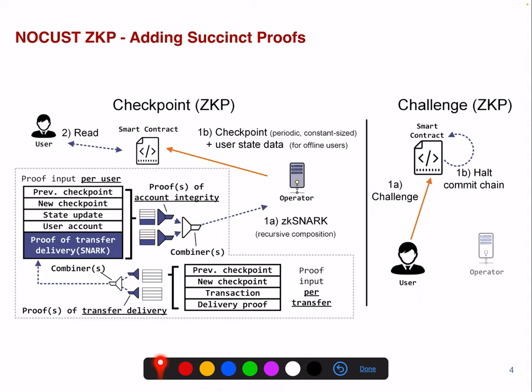Instead of using a Merkle tree, we could also use a zero-knowledge proof to represent all user accounts, giving a proof of account integrity. You take the previous checkpoint, the new checkpoint, the state update, and the user account, and combine these, then write this on-chain. The advantage is that if a user is able to challenge the operator, this is an immediate proof of misbehavior and the commit chain halts. There's no challenge-response protocol between the operator, which makes the whole protocol less interactive and safer for users.